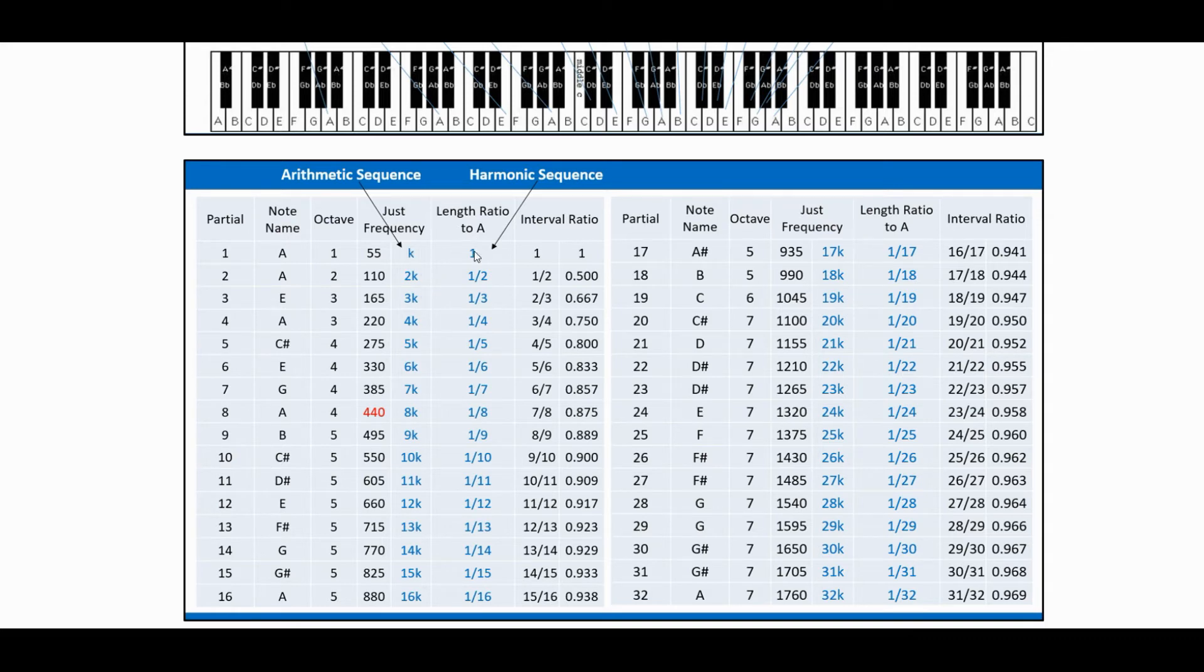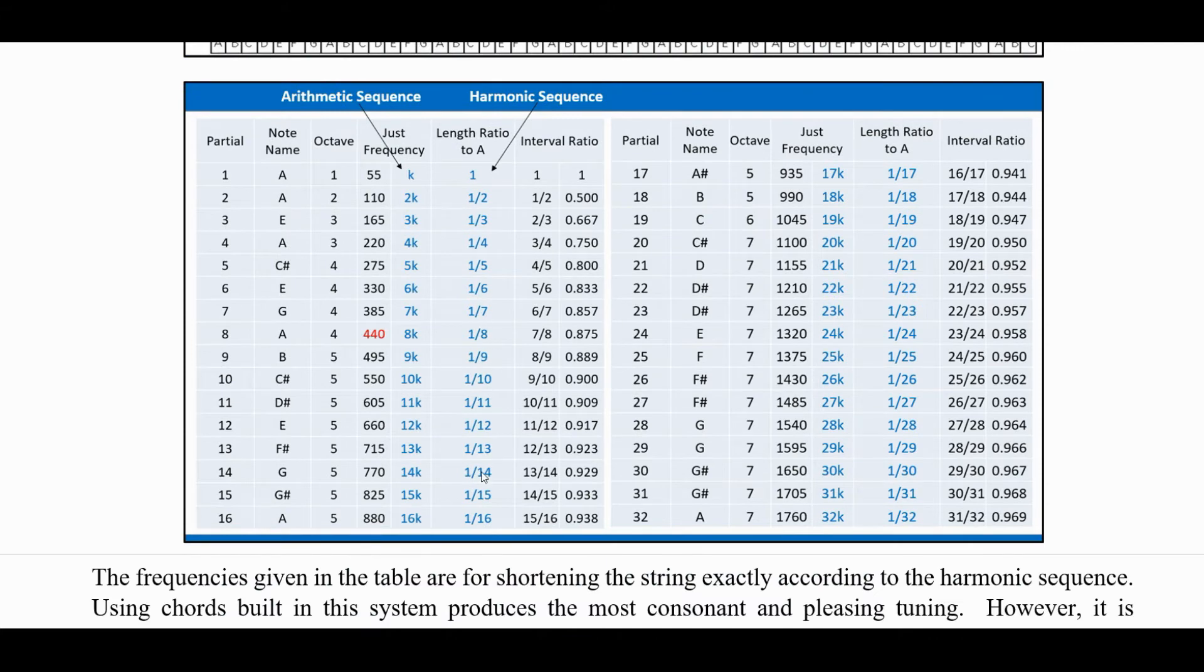But if you do the length ratios, you get the harmonic series right there, the harmonic sequence. And if you do the interval ratios from 1 to the previous one, they're worked out here. They're simple fractions, fractions with small numbers there. And I've worked those all the way out up to the 32nd partial.